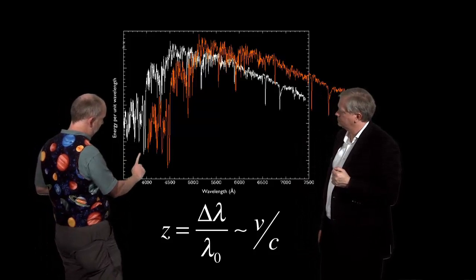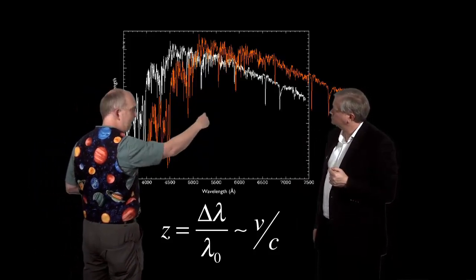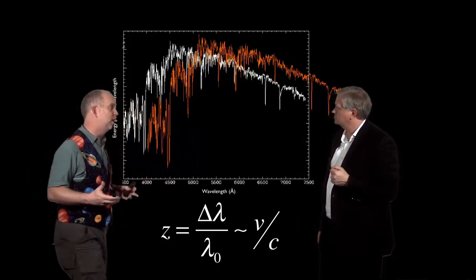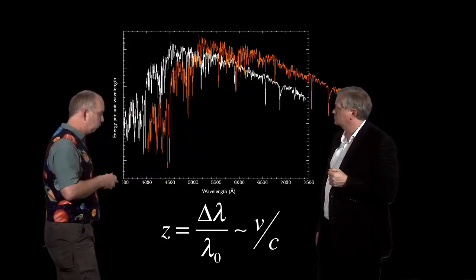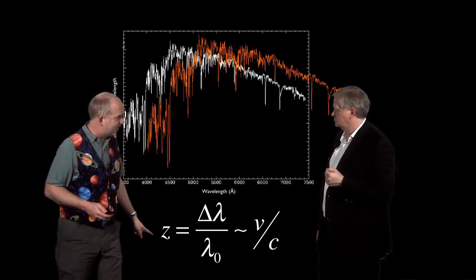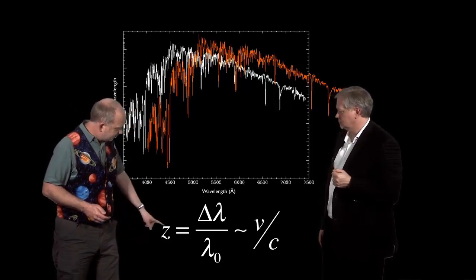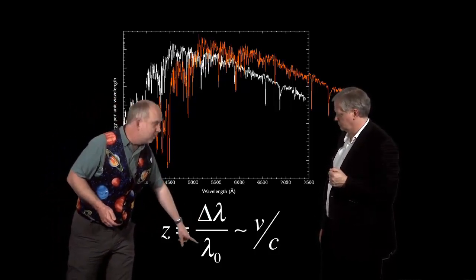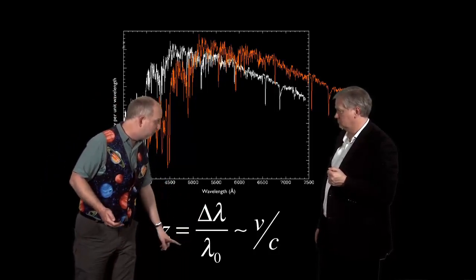What you find is that every dip or peak or bump in the spectrum, every emission or absorption line, has had its wavelength increased by a constant ratio, and that ratio is called the redshift and written for some unknown reason as Z rather than R, and it's given by the shift in wavelength divided by the wavelength you'd expect in a nearby galaxy or in your laboratory.